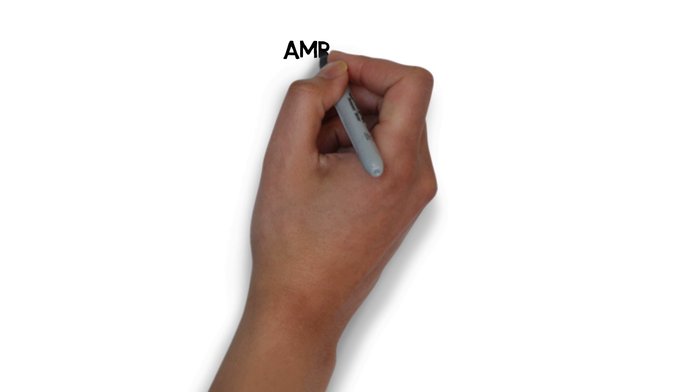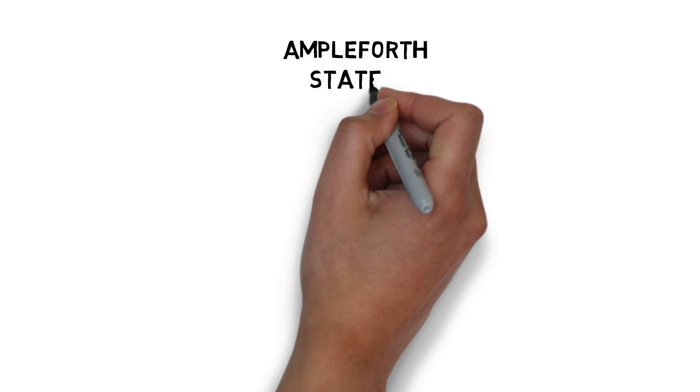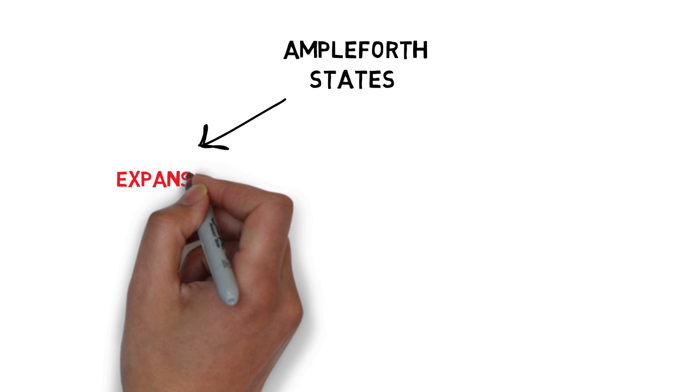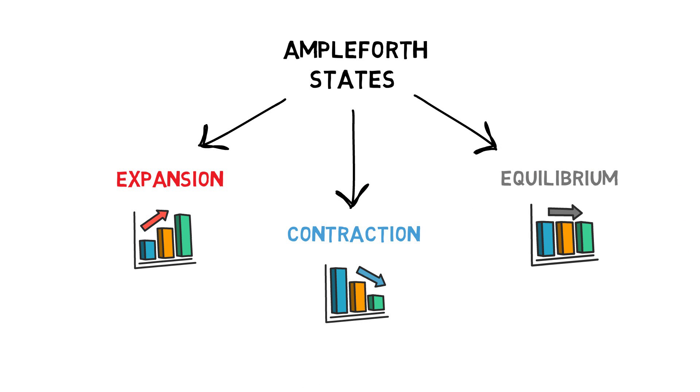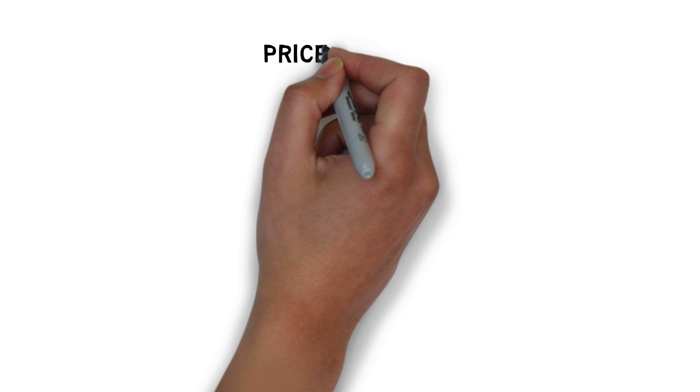Let's see how this unique feature of Ampleforth can be achieved. There are three states that the Ampleforth protocol can be in: expansion, contraction, or equilibrium. Before we explain how they work, let's introduce one more concept, price oracles.